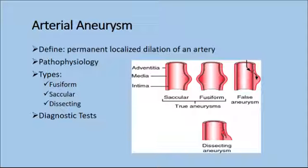The three different kinds: the saccular involves only part of the circumference; the fusiform includes the entire circumference; and the dissecting involves hemorrhage into the vessel wall, which splits and dissects the wall, causing widening of the vessel.